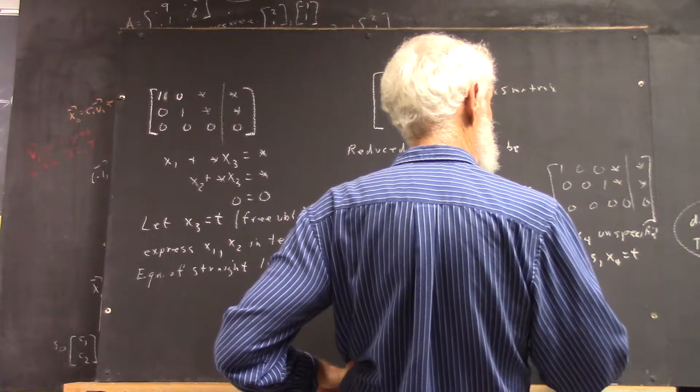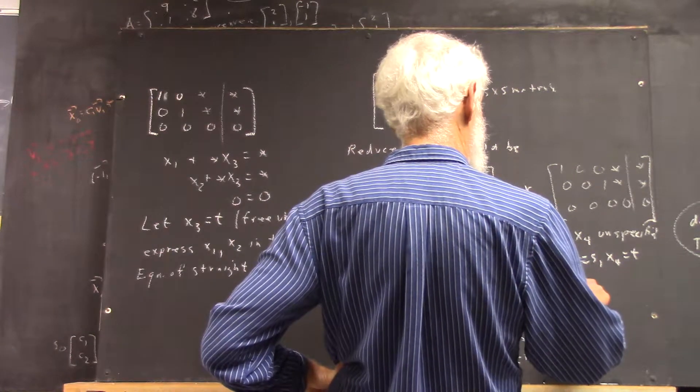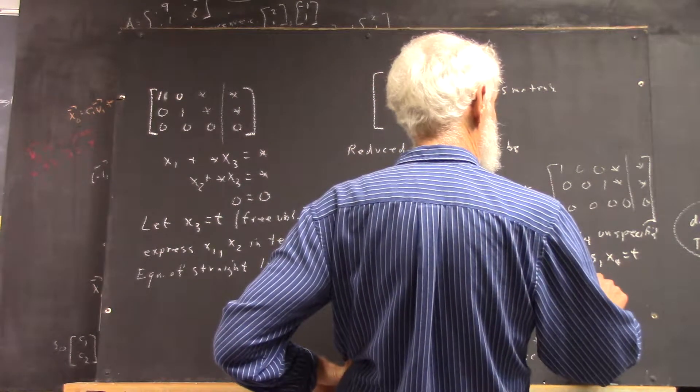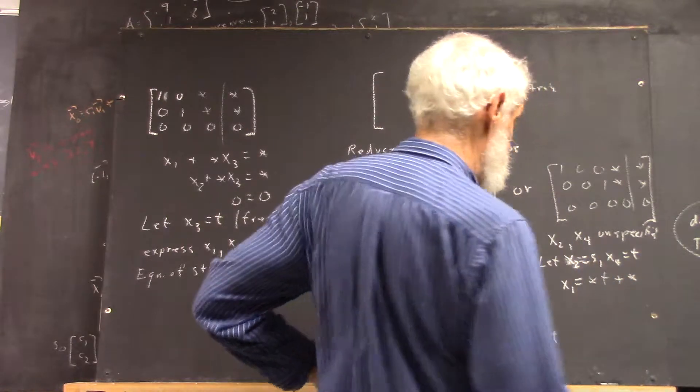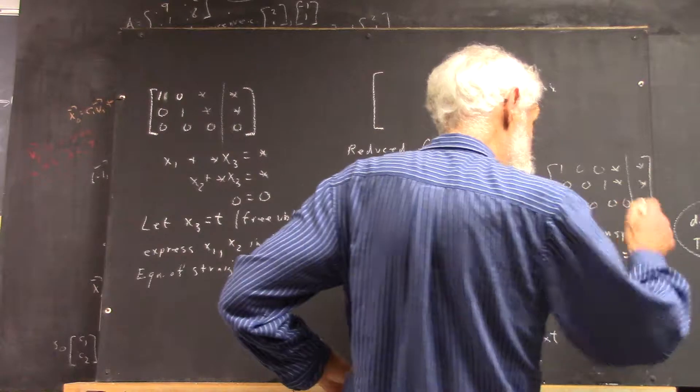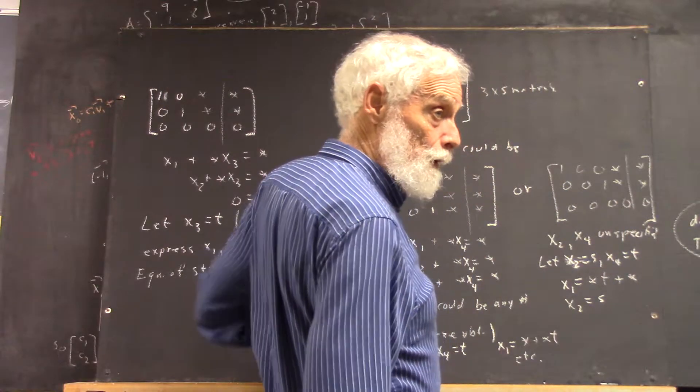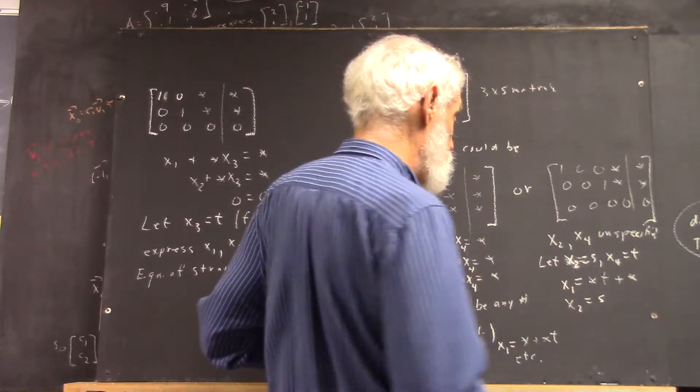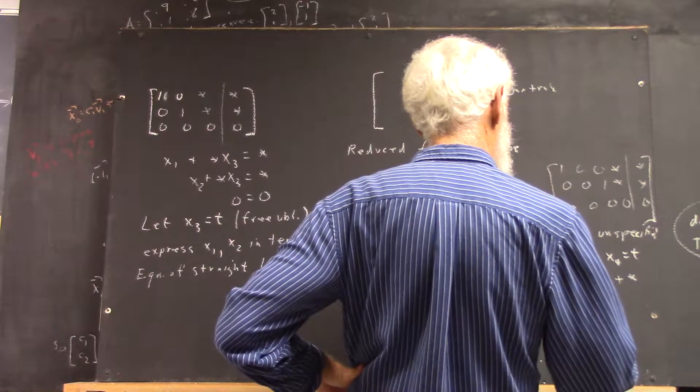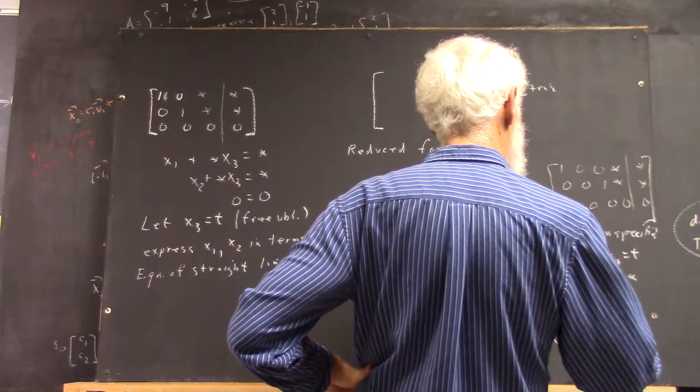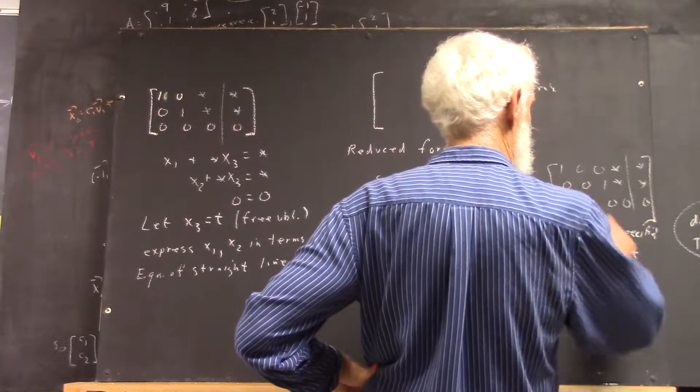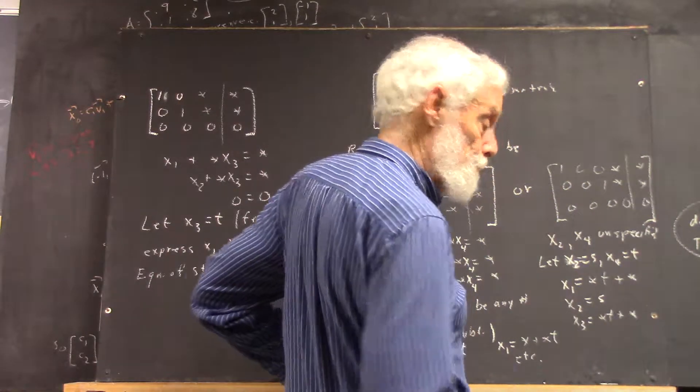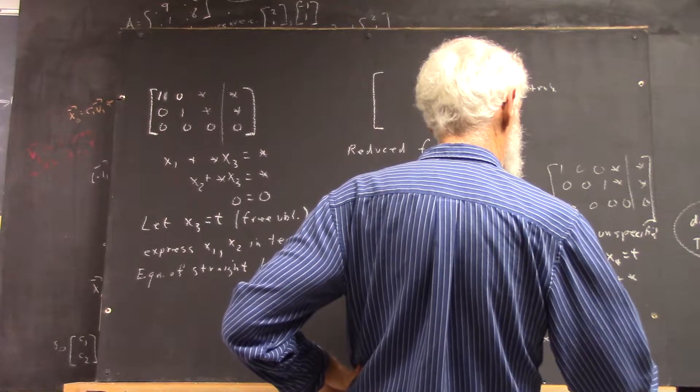So, your equation is x1 equals something times t plus something, right? x2 equals s. You don't know what that is. It could be any numbers. So, x3 equals something times t plus something. That should be from your second row, right?